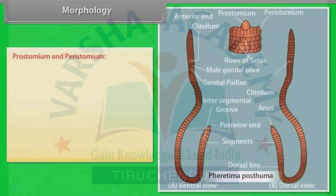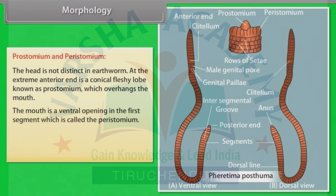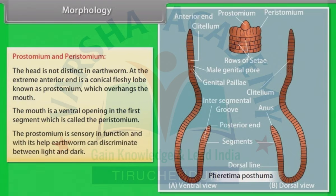Prostomium and peristomium: The head is not distinct in earthworm. At the extreme anterior end is a conical fleshy lobe known as prostomium, which overhangs the mouth. The mouth is a ventral opening in the first segment called the peristomium. The prostomium is sensory in function, and with its help the earthworm can discriminate between light and dark.